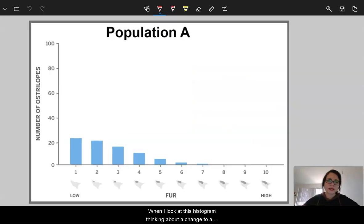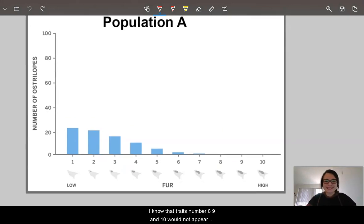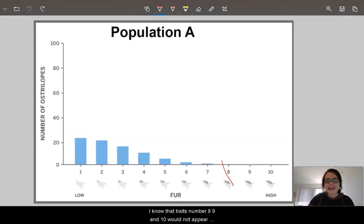I look at this histogram thinking about a change to a cold environment and no mutations, so no new traits can happen. I can know a few things. I know that traits number 8, 9, and 10 would not appear because there's no mutations. That's terrible because those are the traits that would most likely help in a cold environment.